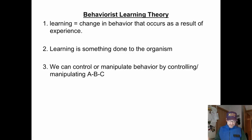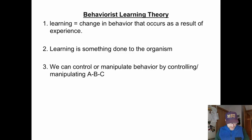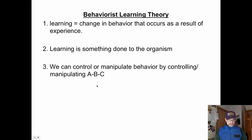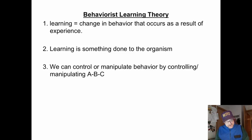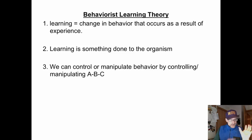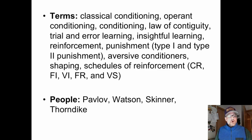Learning, according to behaviorists, is a change in behavior — we only look at external behaviors. It occurs as a result of experience; certain behaviors are rewarded or punished, and learning is a relatively permanent change in behavior. According to this view, learning is something that is done to the organism. We look at antecedents, behaviors, and consequences. We can control behavior by controlling or manipulating the antecedent — what comes before the behavior — or the consequences — what comes after. We can manipulate all behaviors.